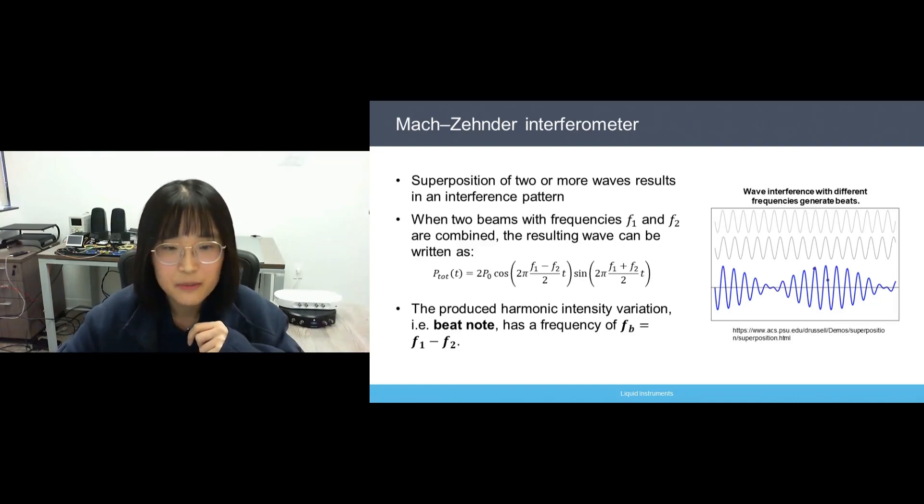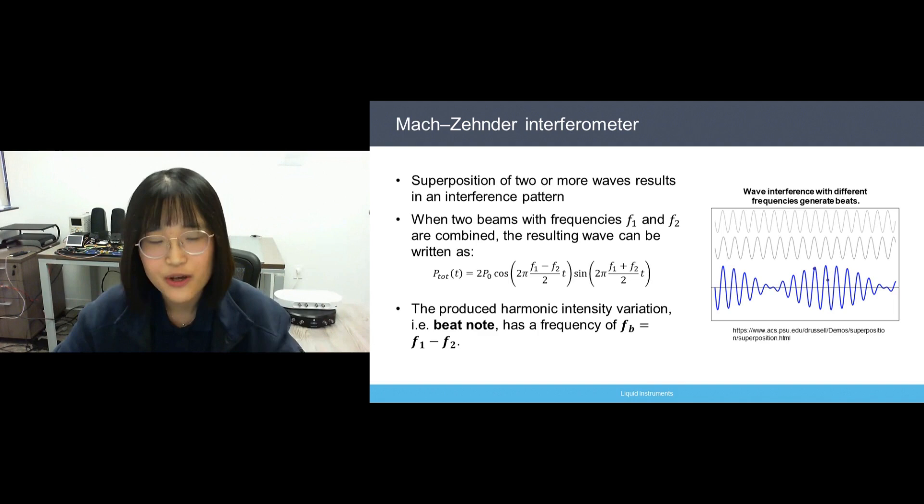In a Mach-Zehnder interferometer setup, the output of a light source is split into two beams, and they travel different optical paths and then get recombined, generating interference fringes. This setup helps determine the relative phase shift between two collimated light beams.